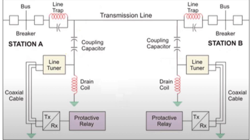The Line Matching Unit, or LMU, is a composite device that includes a drain coil, isolation transformer, tuning device, and earth switch. The LMU connects audio and radio frequency signals to the PLCC terminal and also protects the PLCC equipment from over-voltages caused by transients in the power system. Its tuning device, consisting of RLC circuits, acts as a filter, allowing only the desired frequencies to pass.